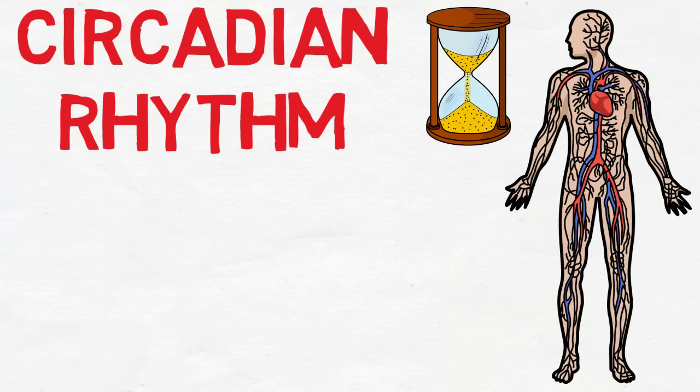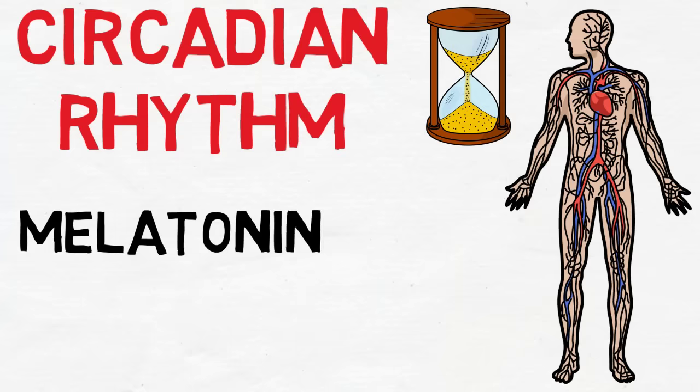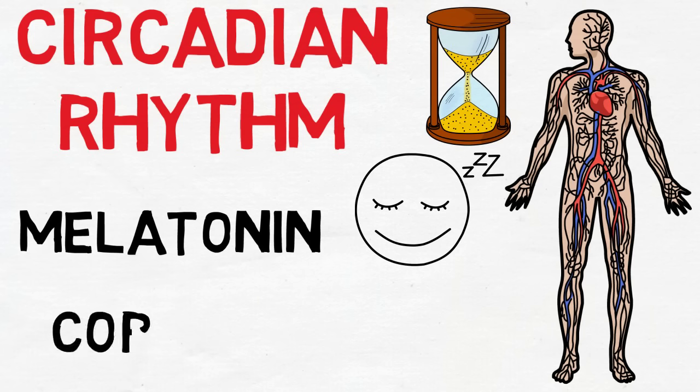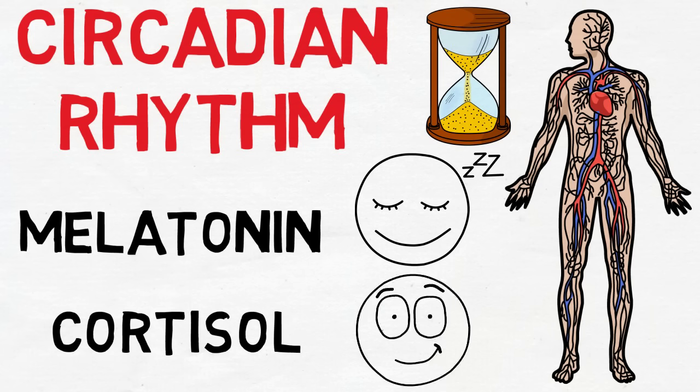One of the hormones that is controlled by this body rhythm is called melatonin. We start to produce it in the evening and this hormone is the reason we feel sleepy at night. However, in the early morning melatonin levels drop and we start to produce a different hormone called cortisol. Cortisol is what makes us feel awake and energetic in the morning. So circadian rhythm controls those two hormones. But what controls our circadian rhythm?